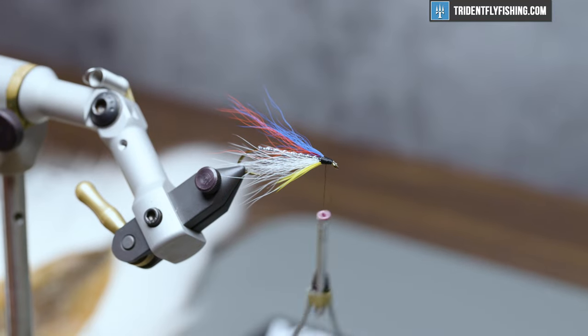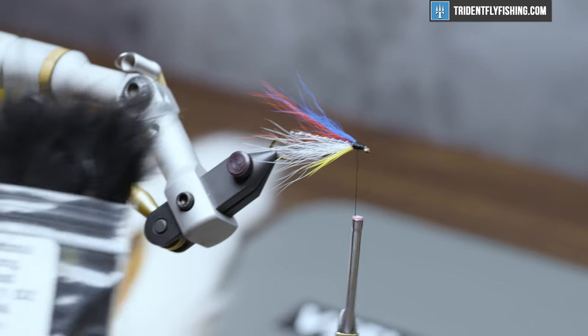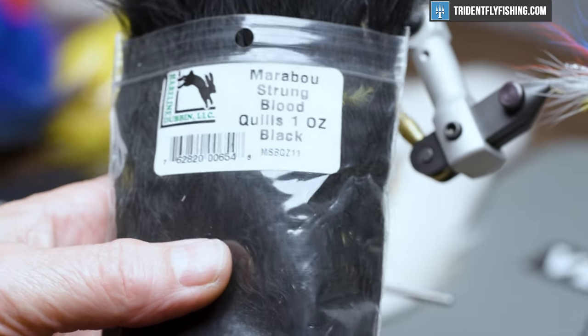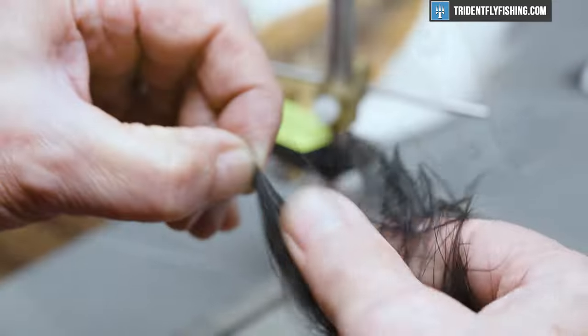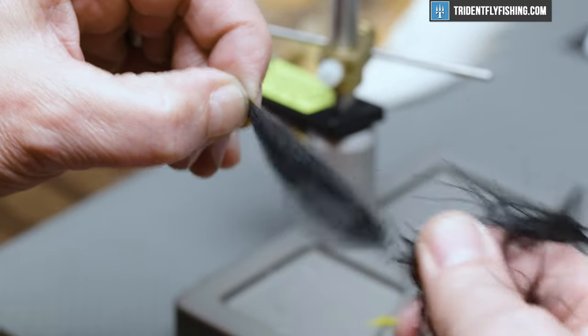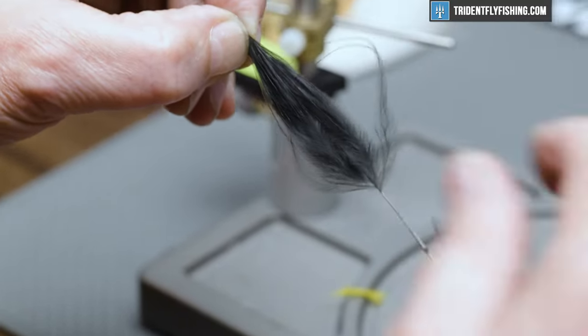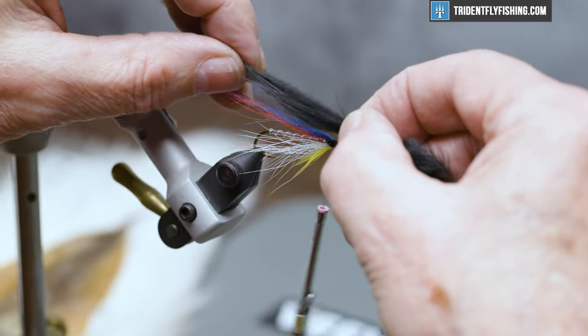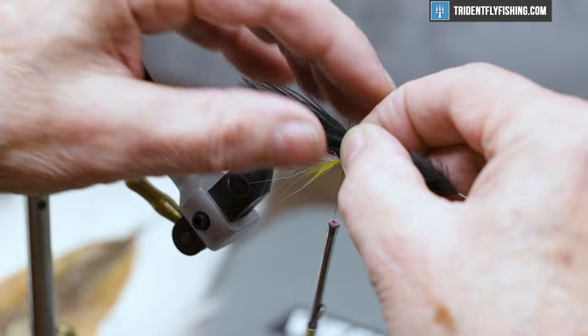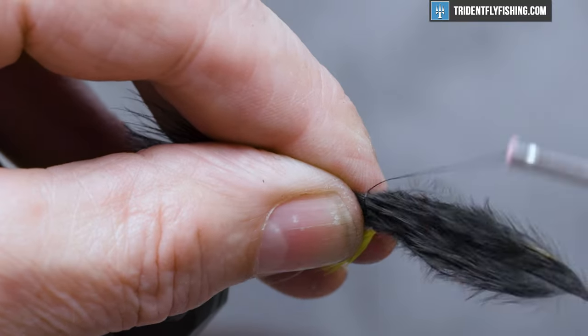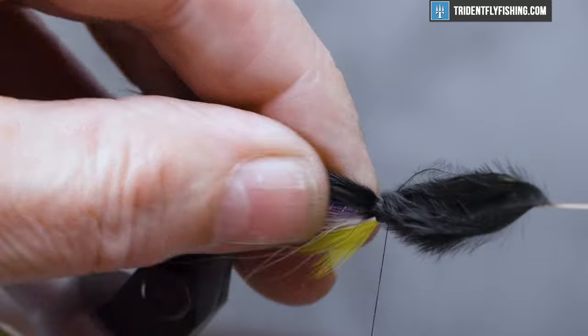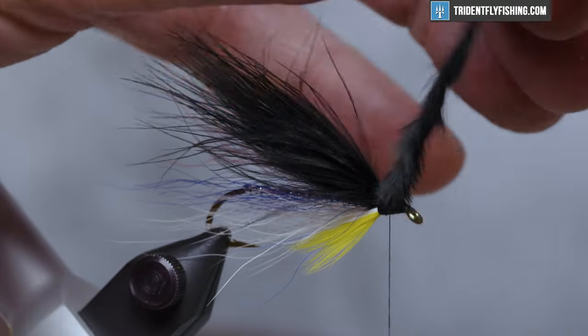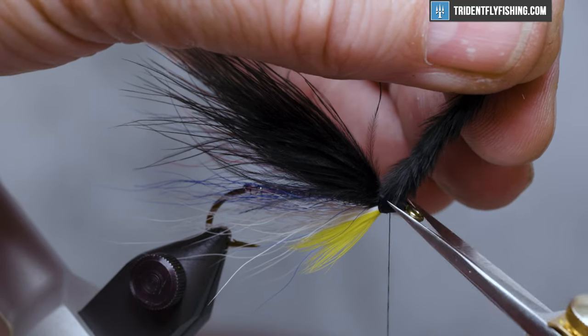And for the main part of the wing, we're going to use some hairline marabou strung blood quills in black. Pull away some of the material we don't need to keep the bulk down. I'm going to tie this on top and it's going to extend back as far as the bucktail did. Cut off what we don't need.